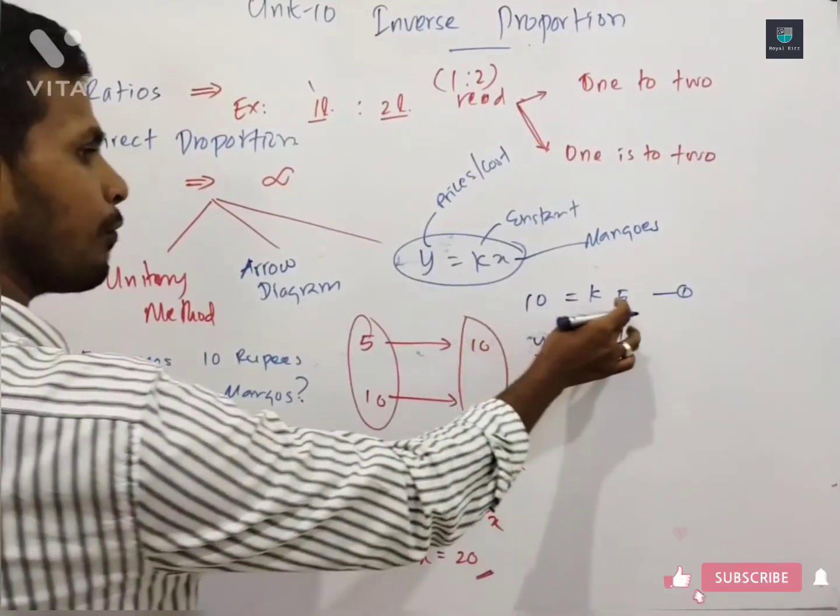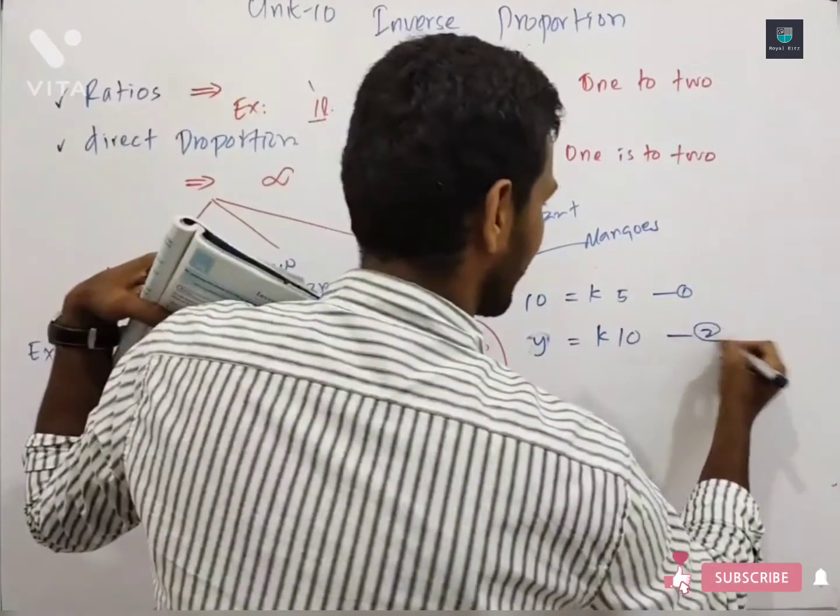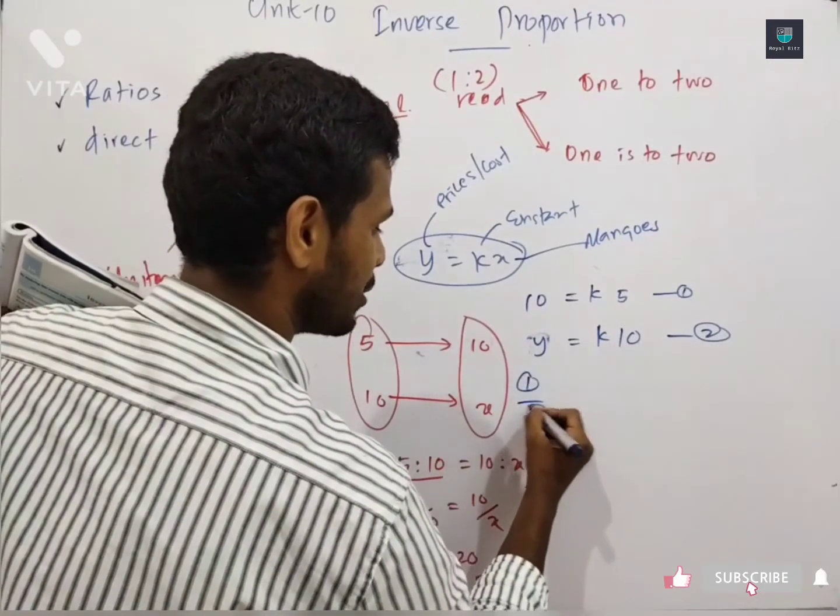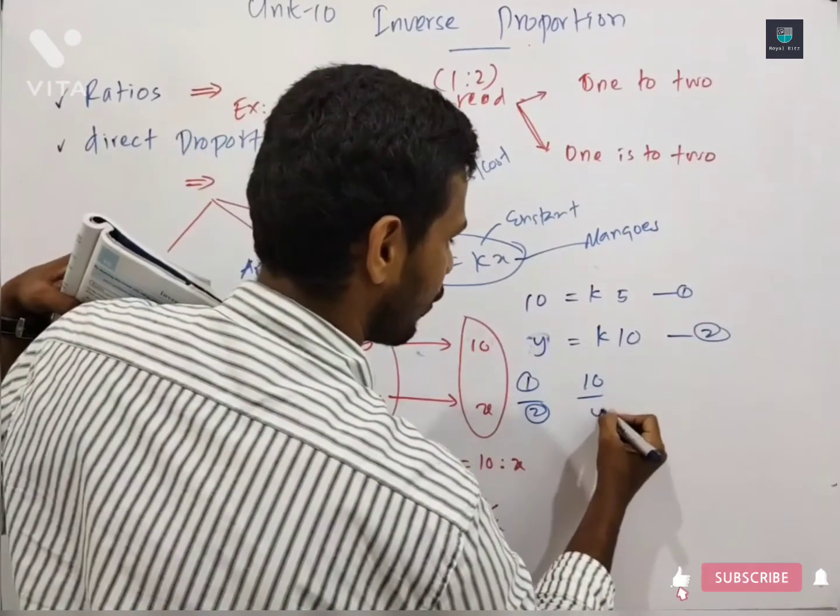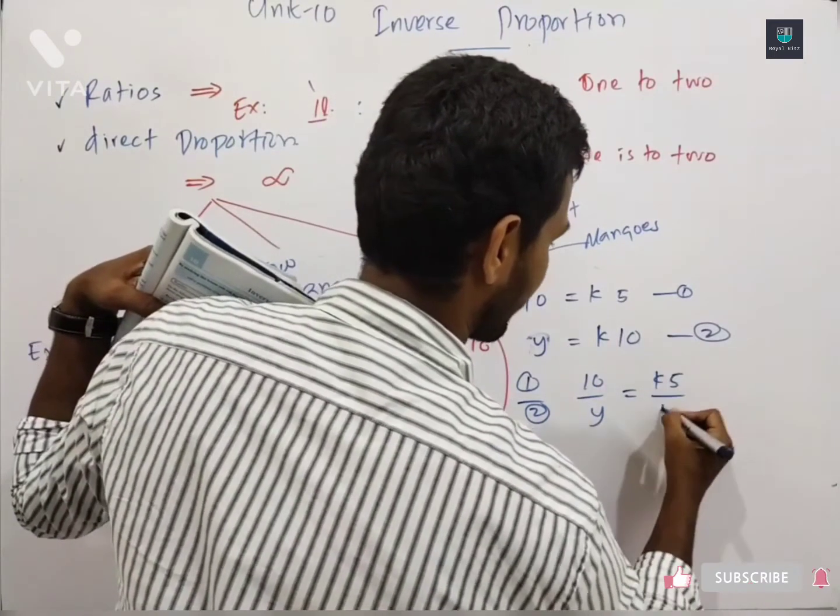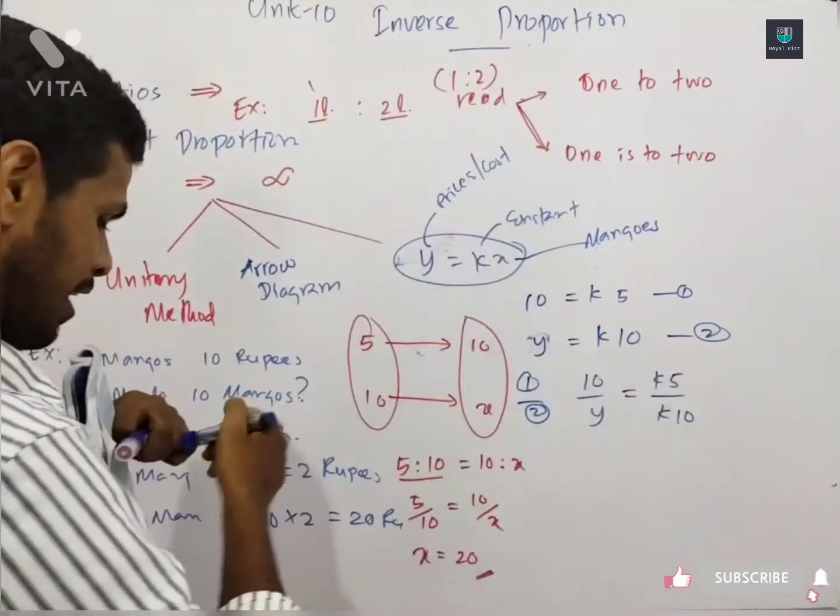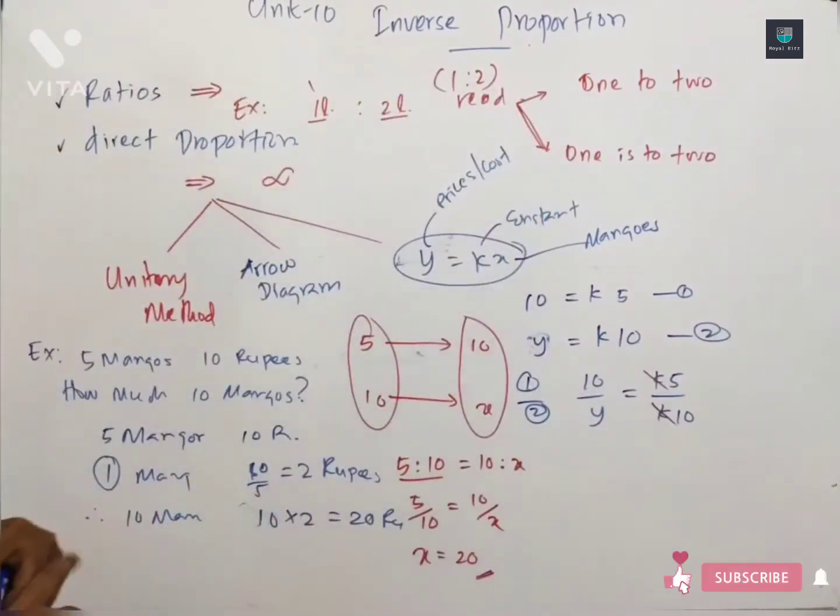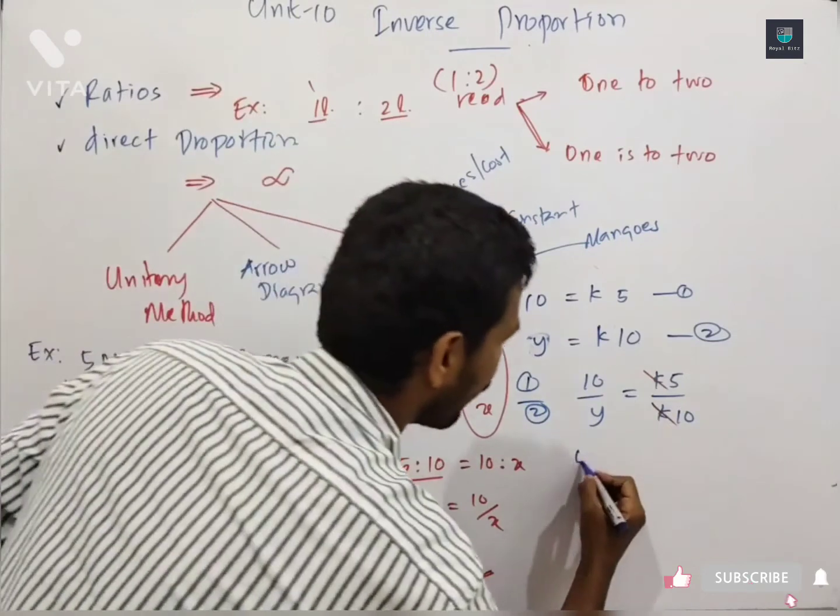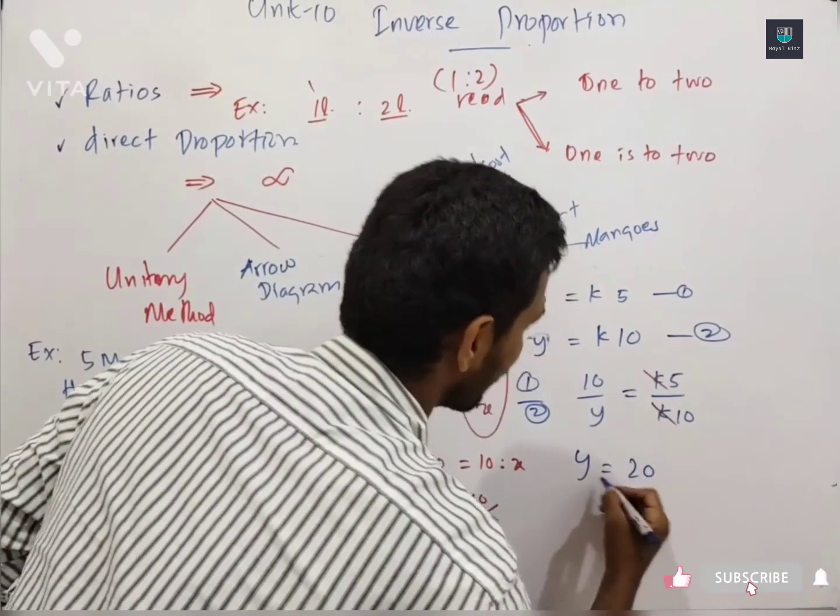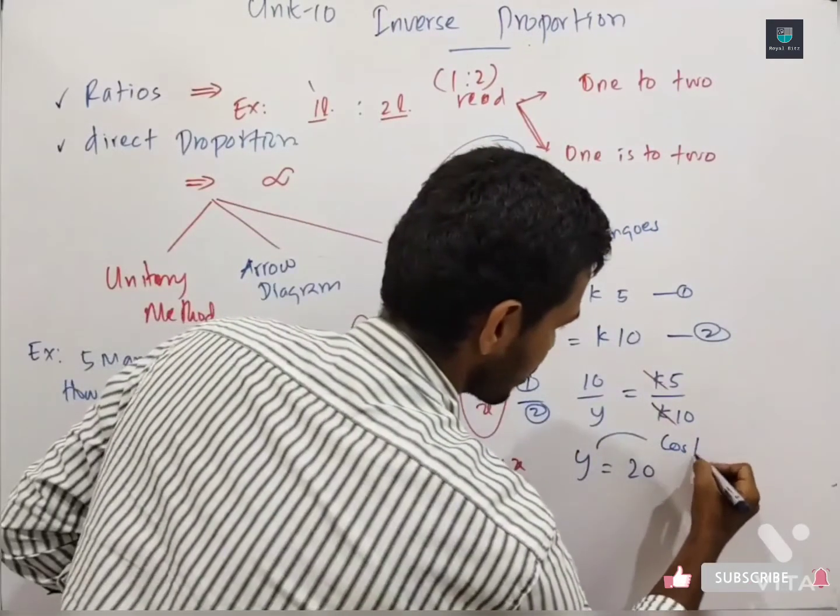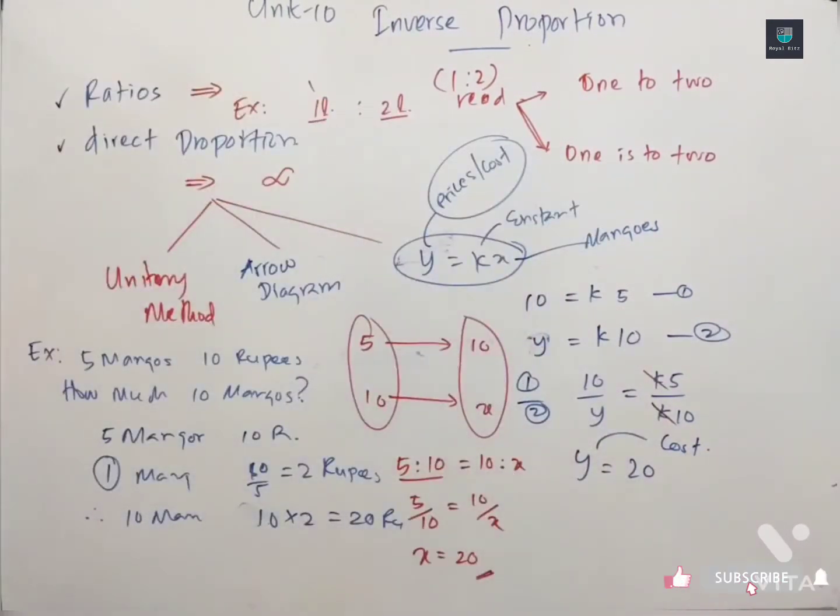So I am applying first time, the price is 10 for 5 mangos. Second time, the price is unknown, we are going to find for the 10 mangos. So now, 10 over y is equal to k times 5, k times 10, and k and k will cancel. So now y is equal to 20. This is summary, this is complete.